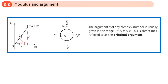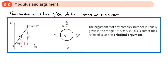The modulus is the size of the complex number — basically how far the complex number is from the origin, so it's the distance from the origin. The origin is the point zero plus zero i. We can find that distance using Pythagoras.